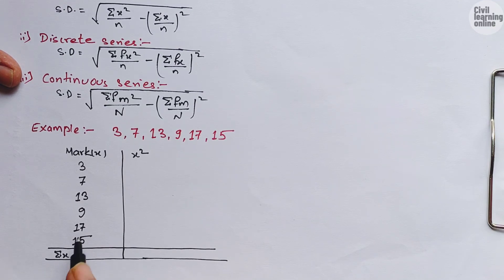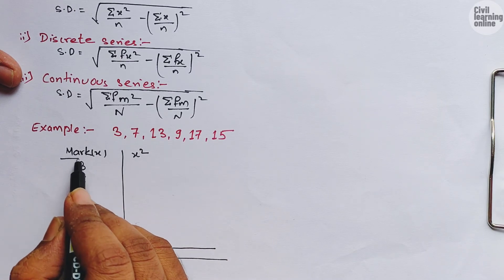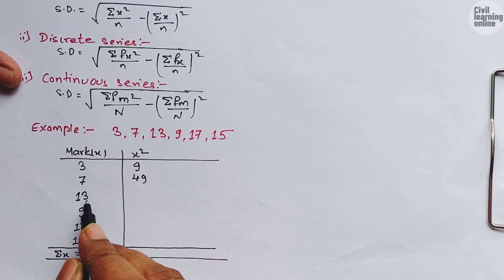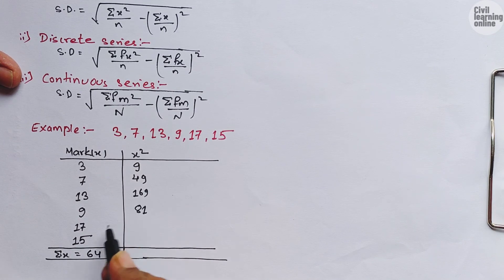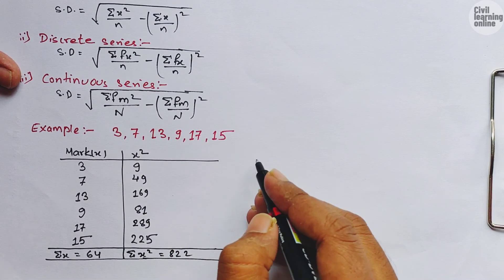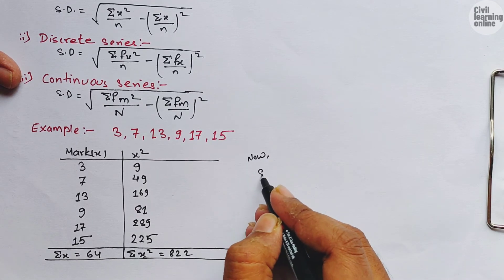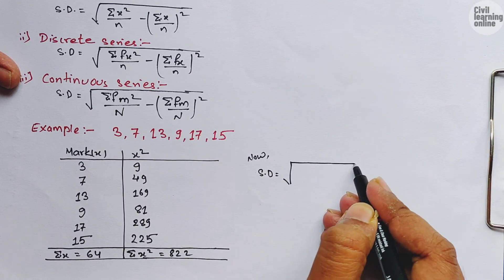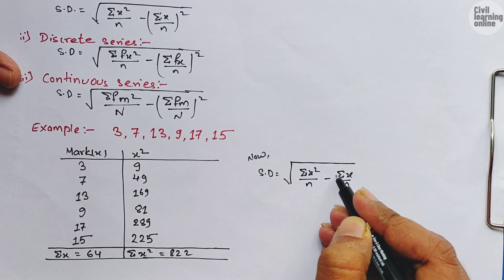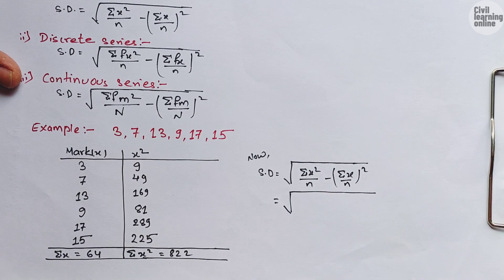Write the x values serially: 3, 7, 13, 9, 17, and 15. Σx means the sum of all the data, which gives us 64. For the x² column: 3²=9, 7²=49, 13²=169, 9²=81, 17²=289, 15²=225. Finding Σx² gives us 822. Now use the formula: SD = √(Σx²/n − (Σx/n)²).